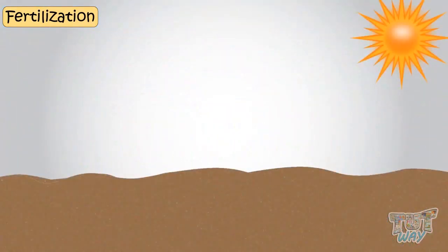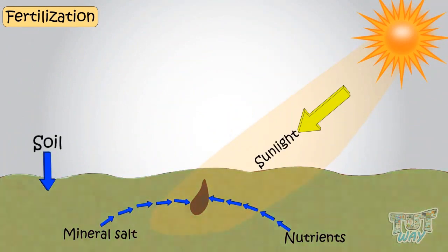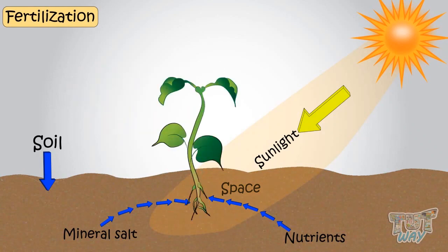When a seed is sown, it requires enough sunlight, mineral salts, water, space and air to grow into a new plant.